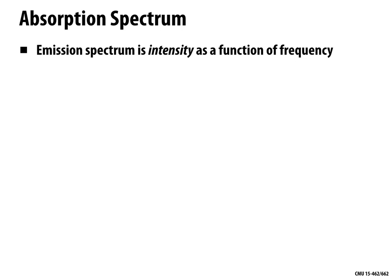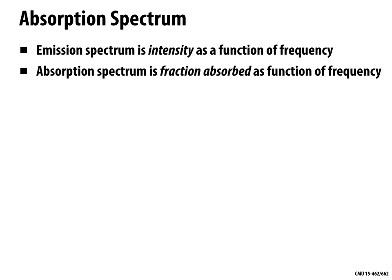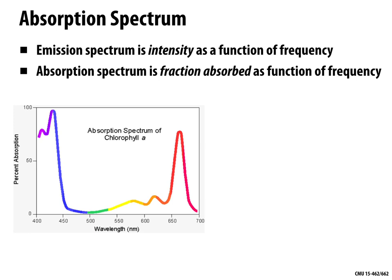We can also talk about how much something absorbs rather than emits. Emission was intensity as a function of frequency; absorption is fraction absorbed as a function of frequency. Here's an example of an absorption spectrum: along the bottom we have wavelength going from short (bluer) to long (redder), and the vertical axis shows percent absorption — if I shine perfect white light on this material, what fraction is absorbed at each frequency?